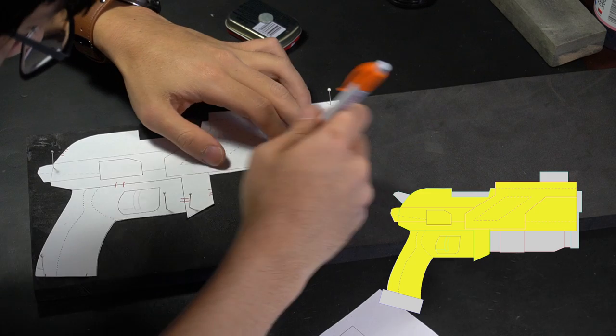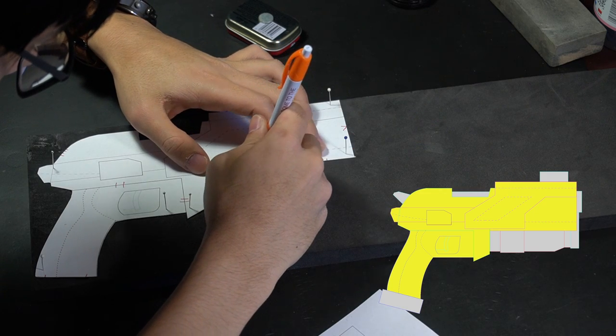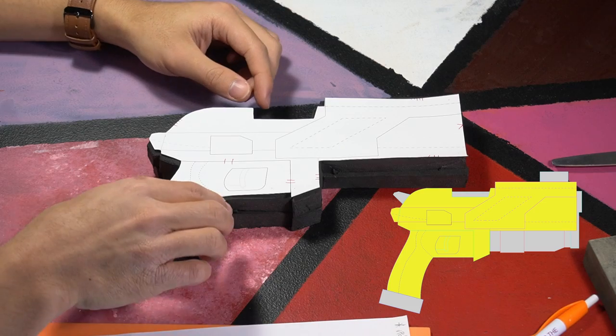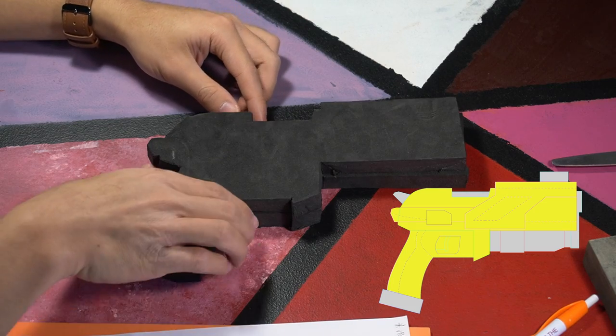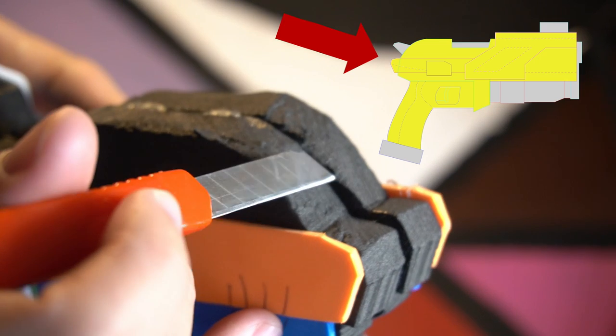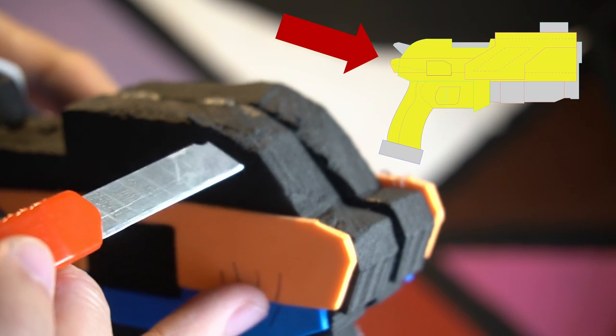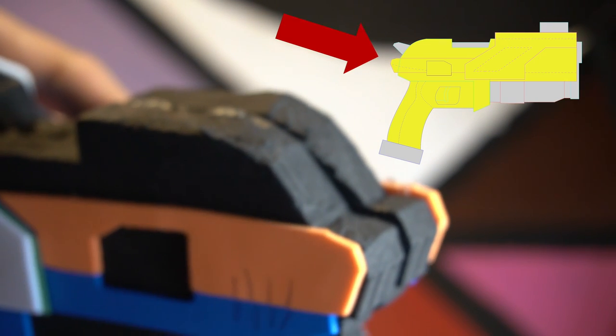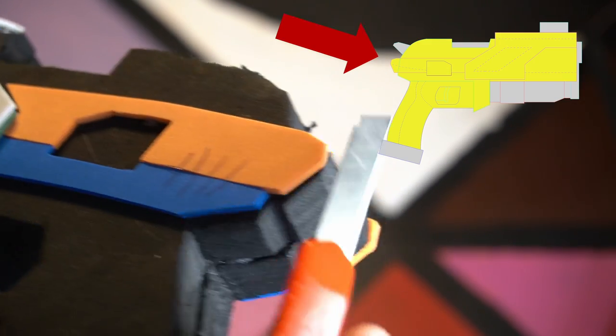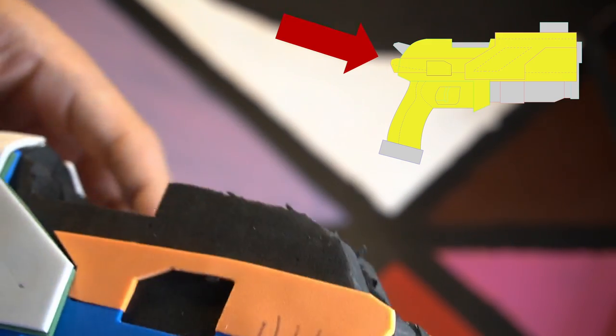The first thing we'll want to do is cut out the main body of the gun. We'll cut out the paper template so it looks like this, then copy that to foam and cut it out. I used two layers of foam since just one layer felt a little thin for a gun. For the back of the gun here, you might want to leave a bit of space and cut around the line. That way, after you glue it together, you can trim it a lot closer to the line, and that'll ensure that the two pieces line up much better.